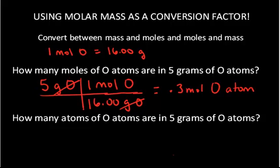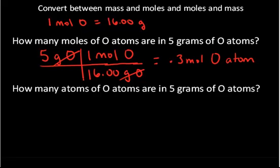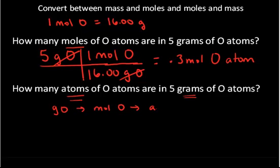So if I have 5 grams of oxygen atoms, I know that I have 0.3 moles of oxygen atoms in that sample. The next question says: how many atoms of oxygen are in 5 grams of oxygen? The previous question was how many moles; now we're asking how many atoms. Whenever we convert to atoms, we have to first convert to moles and then to atoms. We don't have a direct conversion factor from grams to atoms, so we convert from grams of oxygen to moles of oxygen to atoms of oxygen.